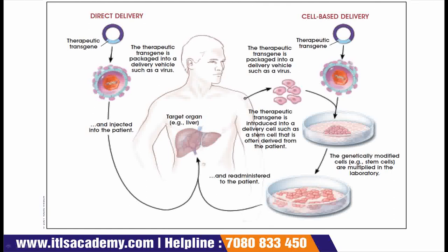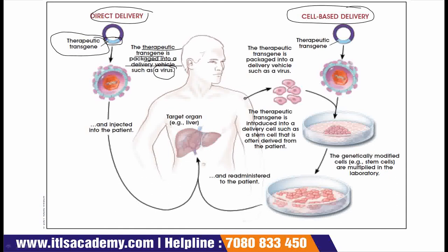For gene delivery, two methods exist. The first is direct delivery: the therapeutic transgene is packaged into a delivery vehicle such as a virus and injected directly into the patient, targeting a specific organ such as the liver.